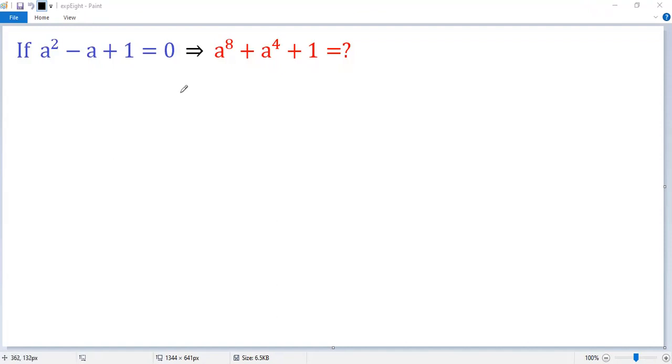But it turns out it has no real solutions, so that is not good. But we can change the given condition, move these two terms to the right side. So we get A squared equals A minus 1. We denote this as equation 1.